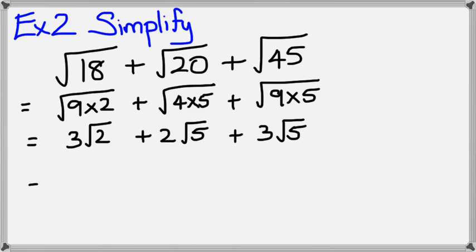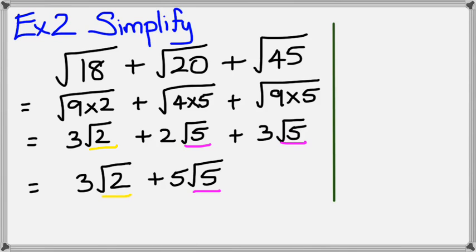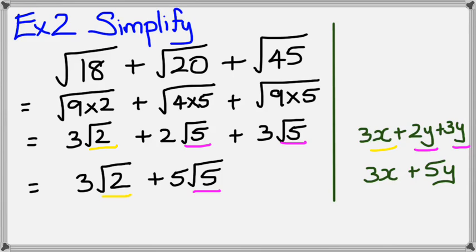So just like collecting like terms, I'm going to have 3 square root of 2 plus 5 square root of 5. If you think of this as something like 3x plus 2y plus 3y, this would equal 3x plus 5y. Because the x and y are not like terms, likewise square root of 2 and square root of 5 are not like terms, so you can't really add them together.